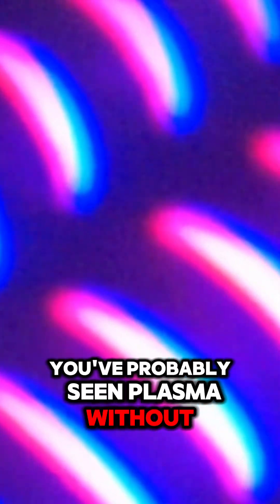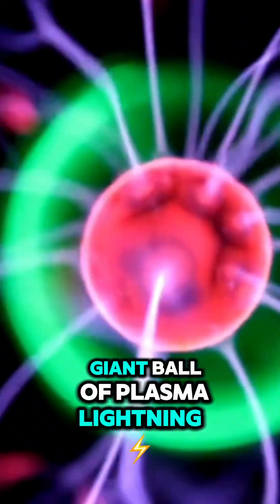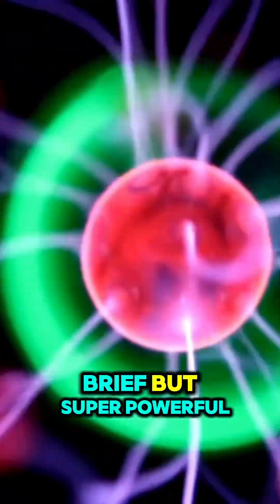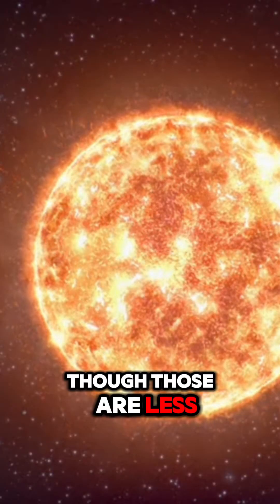You've probably seen plasma without realizing it. It's what makes up stars, including the sun, which is basically a giant ball of plasma. Lightning? That's plasma too. Brief, but super powerful. And in everyday life, it's in neon signs, fluorescent bulbs, and even plasma TVs, though those are less common now.